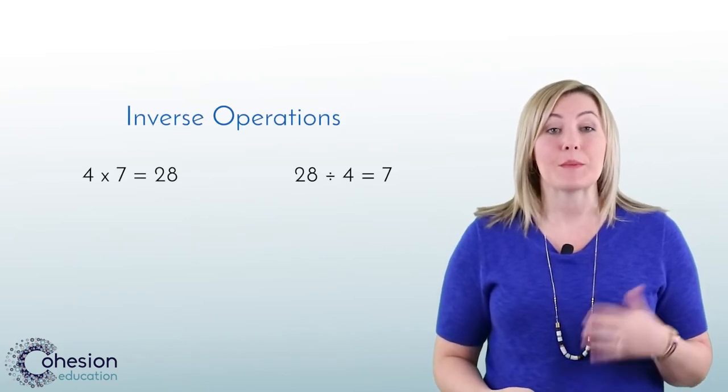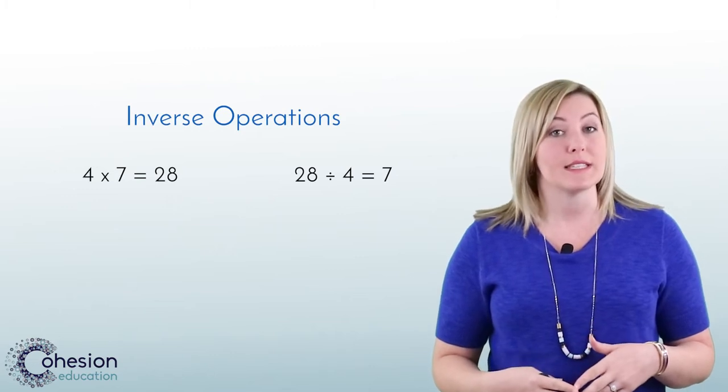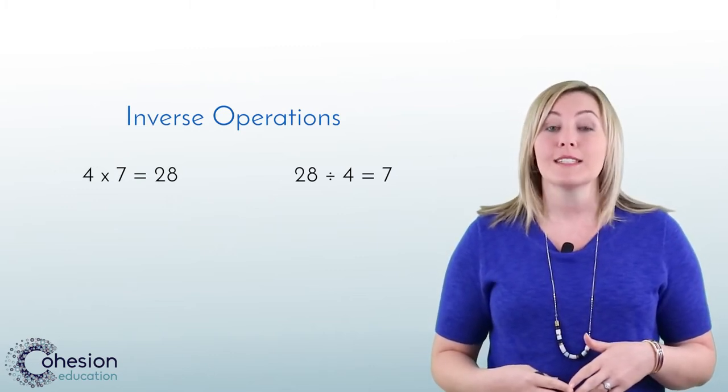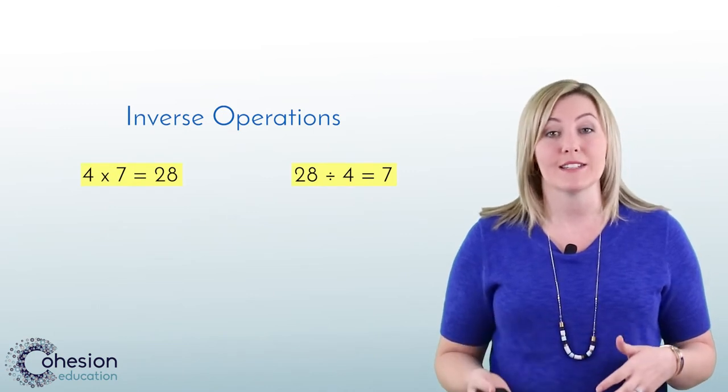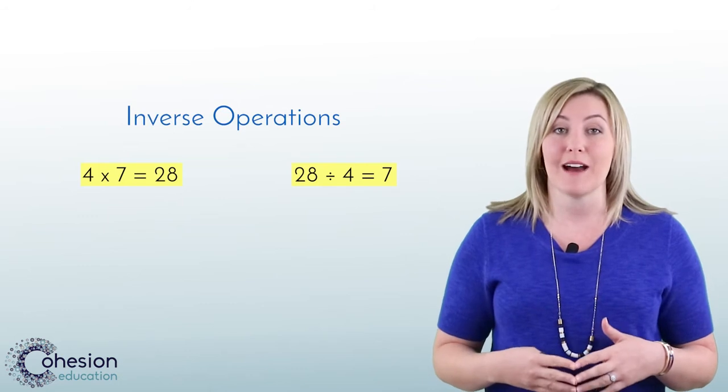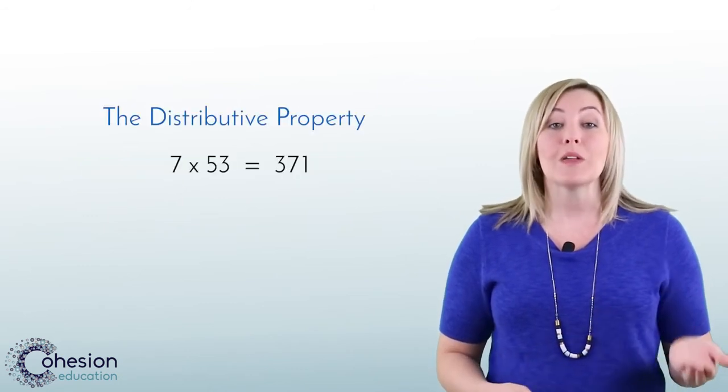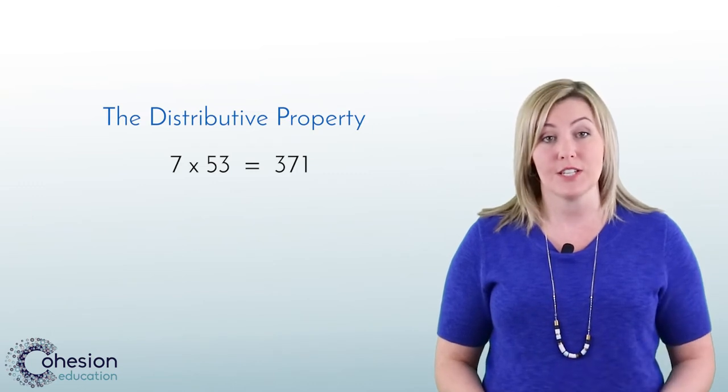Inverse operations means that multiplication and division are opposite of one another when using the same numbers. For example, the statement 4 times 7 is 28 and 28 divided by 4 is 7 prove that multiplication and division are opposite operations. We will also use the distributive property to use multiplication to solve for division.